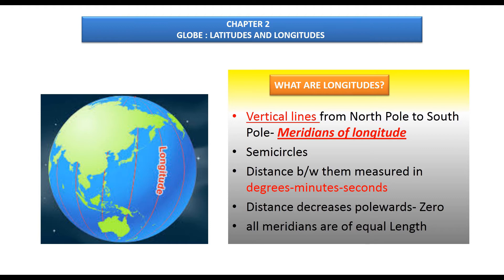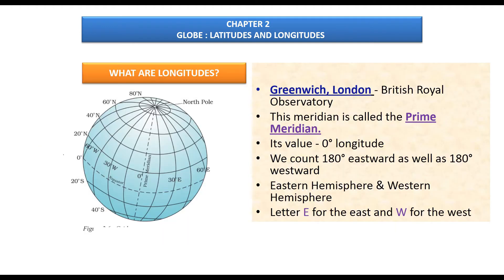Since meridians are semicircles of equal length, it was difficult to choose a reference line. Countries can have any number of longitudes, so all countries agreed to choose a zero-degree base meridian — just as the equator serves as zero degrees latitude. All countries decided on the meridian passing through Greenwich in London, called the Prime Meridian.